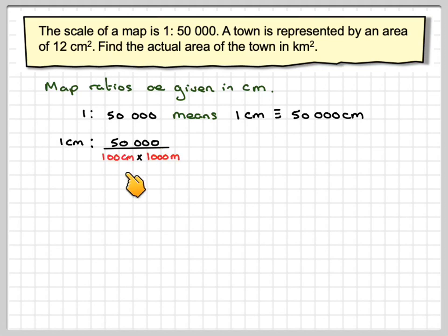If I want to convert that into kilometres, then I'll need to divide that 50,000 by 100 centimetres and 1,000 metres - 100 centimetres because in each metre there's 100 centimetres and then there's 1,000 metres in each kilometre, which gives a scale of 1 centimetre to 0.5 kilometres.